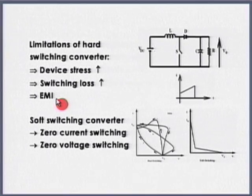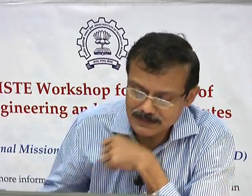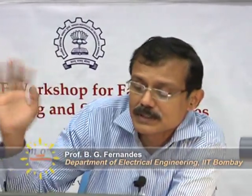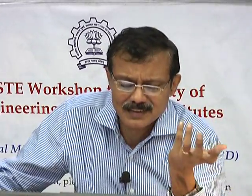If device stress comes down and switching losses have come down, my cooling requirements have come down. Another important result is that I can now increase the switching frequency to a higher value. In a soft switch converter - for example a flyback soft switch converter - switching frequency could be of the order of 500 kilohertz. If you do soft switching, it may be possible to go as high as 500 kilohertz; if you do hard switching, you may not be able to switch at 50 kilohertz.